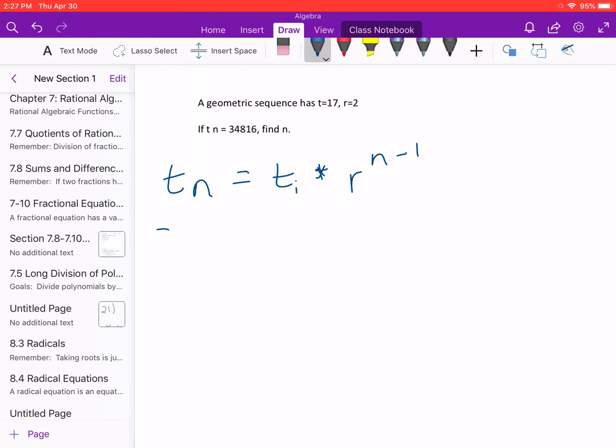So t sub n is 34,816, and our t is 17 times r, which we are told is 2, raised to the n minus 1.